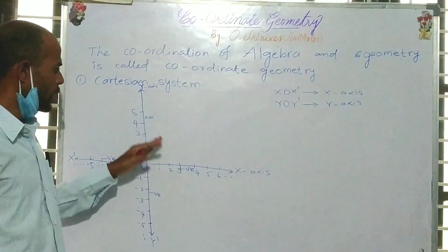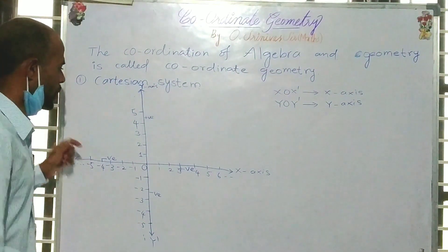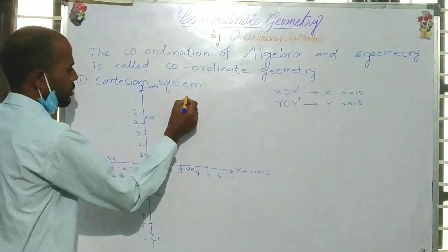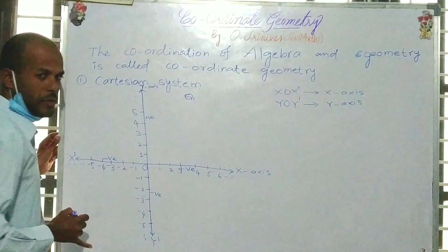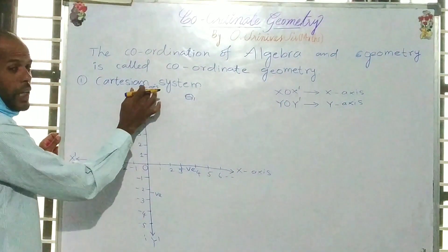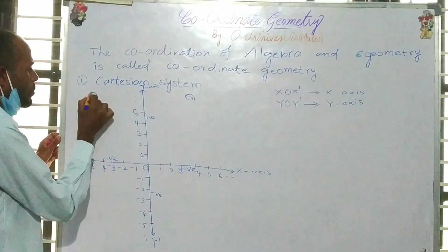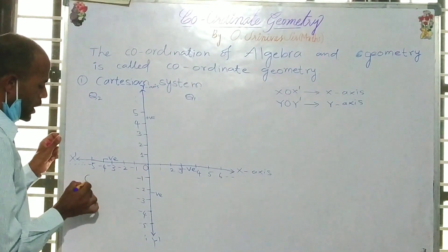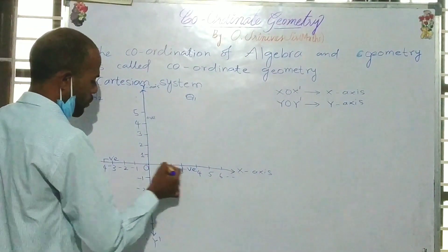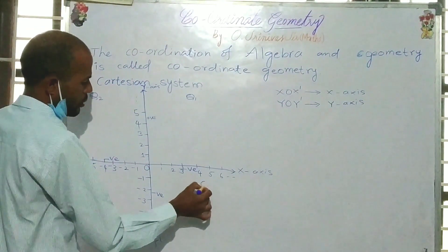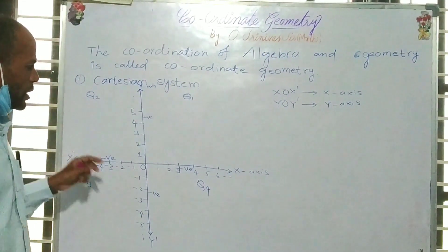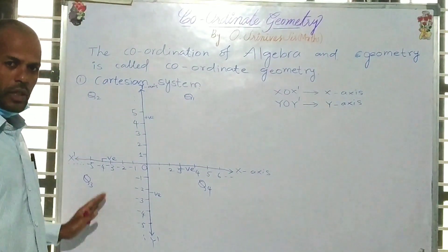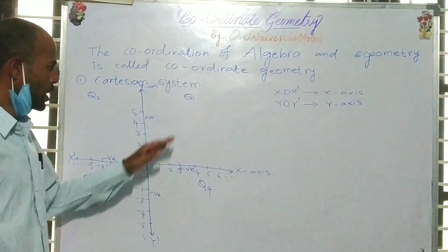The x-y plane is divided into 4 quadrants. What are the 4 quadrants? x-o-y is Quadrant 1. x-dash-o-y is Quadrant 2. x-dash-o-y-dash is Quadrant 3. x-o-y-dash is Quadrant 4. So we have divided the plane into Quadrant 1, Quadrant 2, Quadrant 3, and Quadrant 4.